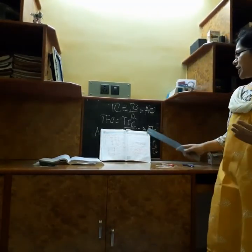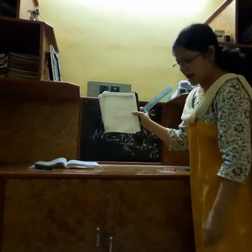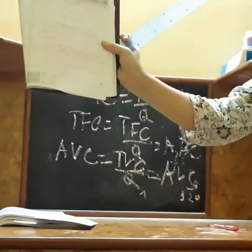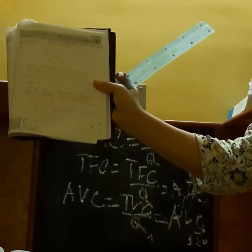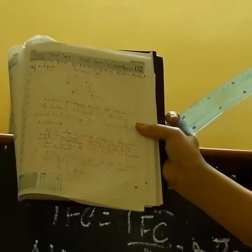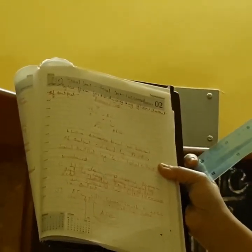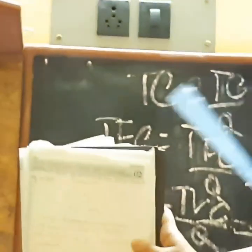Now the question is: what is the shape of the average fixed cost curve? The shape of the average fixed cost curve is a rectangular hyperbola. From the very beginning it starts falling, but after a certain period of time the movement of the curve becomes very slow or very negligible.